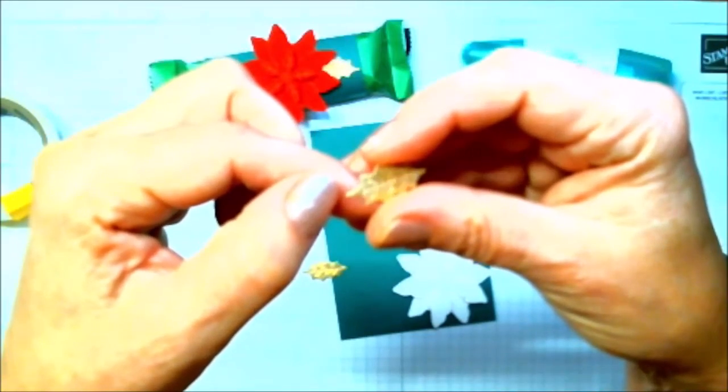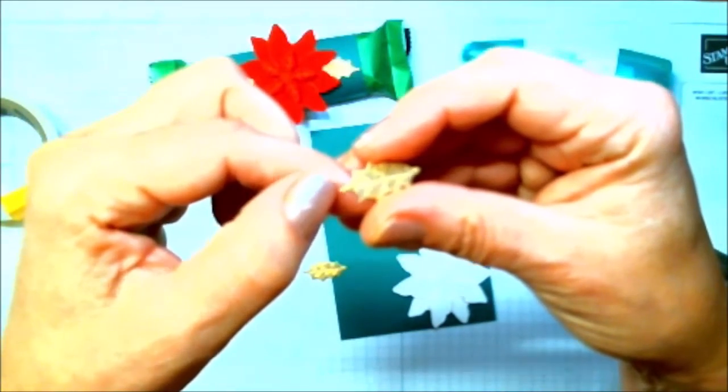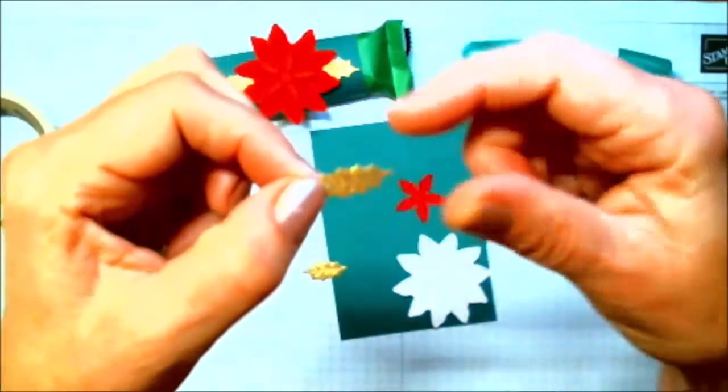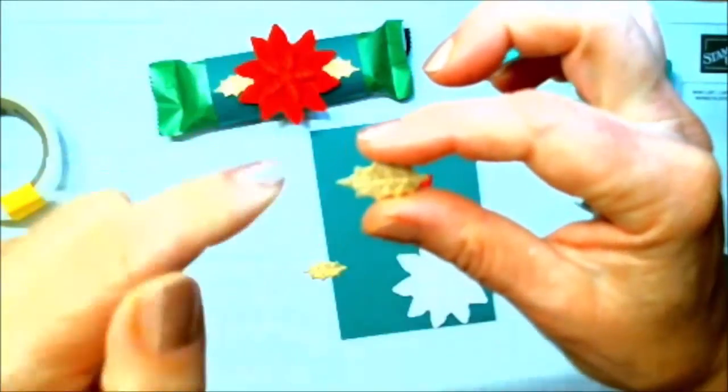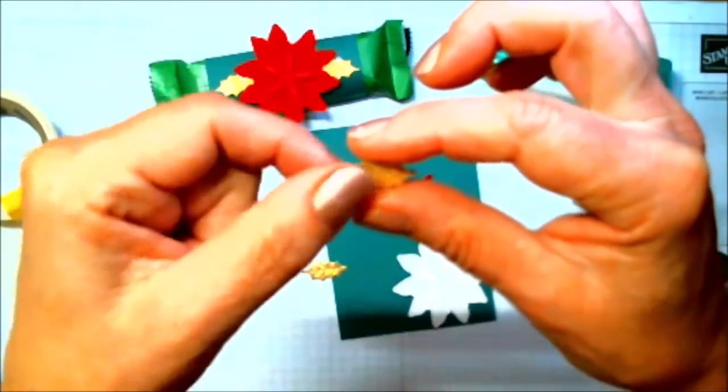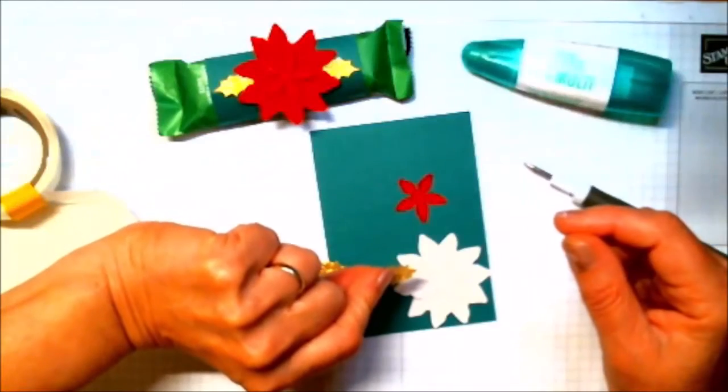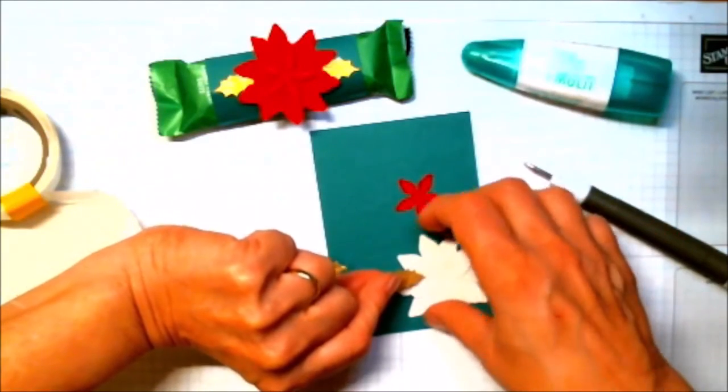Can you see the lines in the holly leaves? And you can see them on that side, and you can't see them on this side. So, please do, if you choose this project, please make sure that you're putting them right side up, which means the vein side is going to go down on the back of the project.